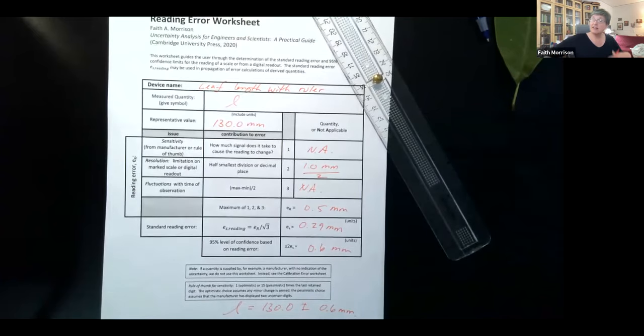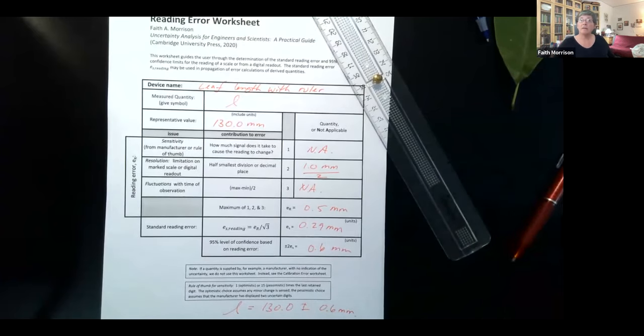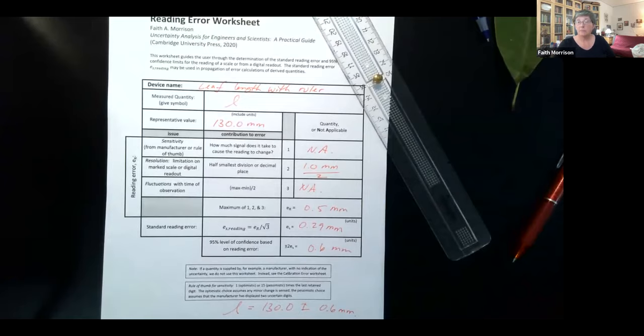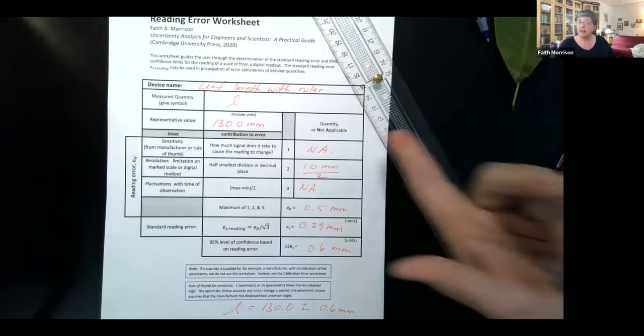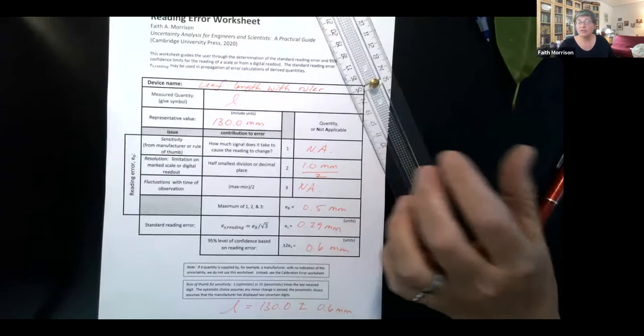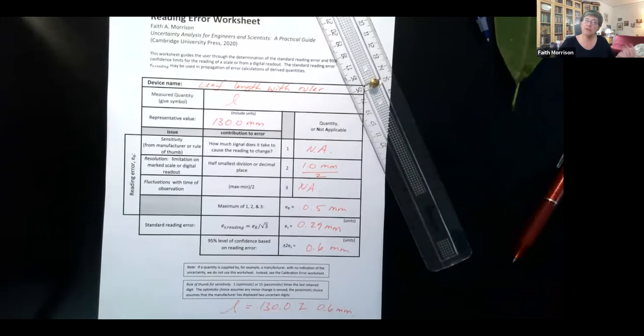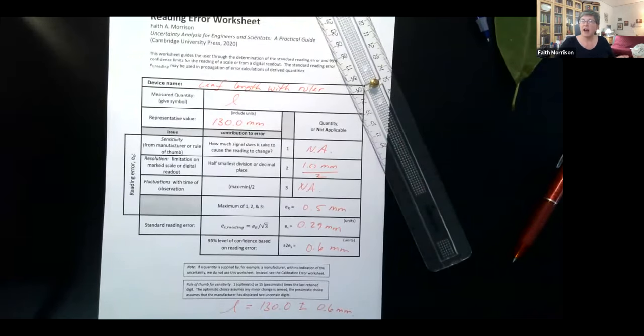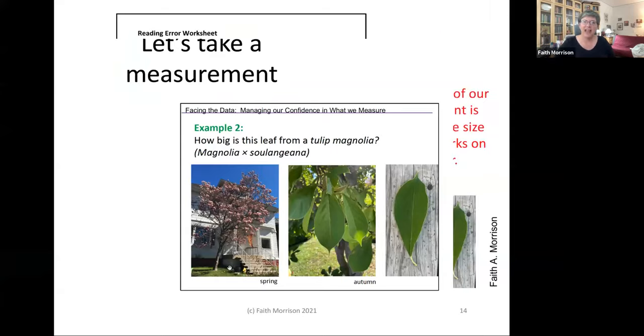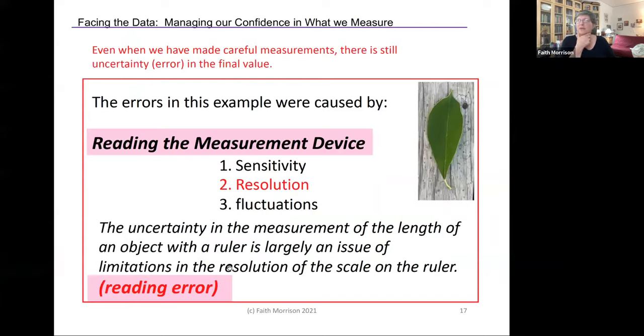So it's a very standardized kind of methodology that moves us through questions that we might not bother with if we're just given a ruler and told to make a measurement. And we wouldn't really be able to say, how do I know that I'm doing this right? How do I know that this is really the accuracy of what I'm doing?